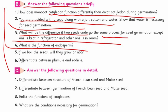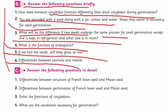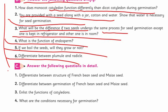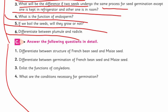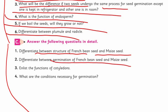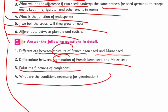What is the function of endosperm? In monocot, I have already taught you. If we boil seeds, will they grow or not? They will die — the embryo will be killed. Differentiate between plumule and radicle — very easy. Coming towards long questions, there are only four. Differentiate between the structure of French bean and maize — dicot versus monocot. Differentiate between French bean and maize seed germination — epigeal versus hypogeal. Functions of cotyledon. What are the conditions required for germination?